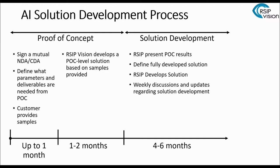Then we start developing the proof of concept, which takes a few weeks. Once ready, we present it to you, show you the findings, and let you review it. Once we have the green light, we define the fully developed solution and develop it — an iterative process including weekly discussions and updates. All in all, it takes a few months. So if you start the process now, by the end of the year you can have an up-and-running AI solution integrated into your medical device.